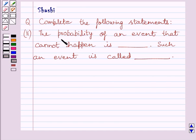Second part is, the probability of an event that cannot happen is dash. Such an event is called dash.